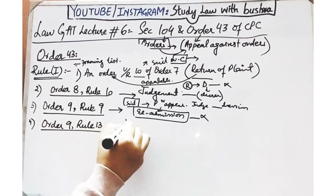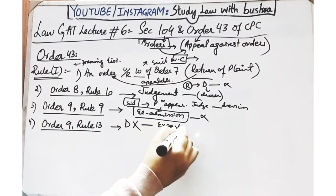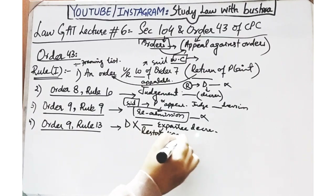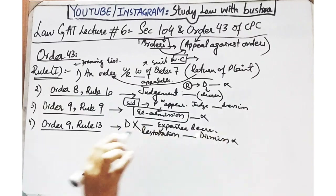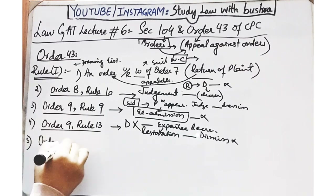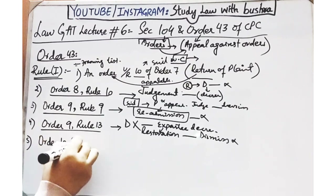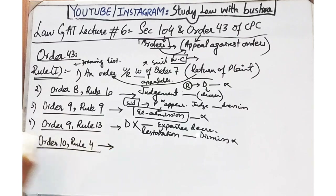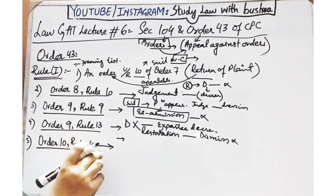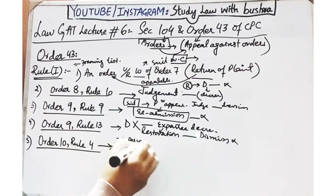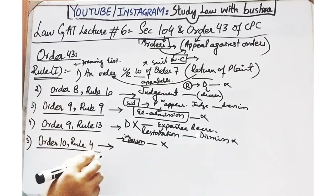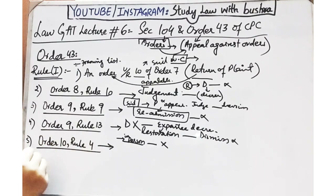Next hai Order 9 Rule 13 - jahan par defendant court ke andar appear nahi hua, court ne defendant ki absence mein ex parte decree pass kar di, uske baad defendant ne restoration of suit ke liye apply kiya, court ne isko dismiss kar diya, to yeh jo court ka dismissal hai, iske against bhi aap appeal file kar sakte ho. Next hai Order 10 Rule 4 - agar court ne kisi bande ko in person bulaya hai, court ke sawaalat ke jawaabaat dene ke liye, aur woh nahi aata ya un questions ke saath comply nahi karta, to agar court koi order pass karti hai, is order ke against bhi aap appeal file kar sakte ho.